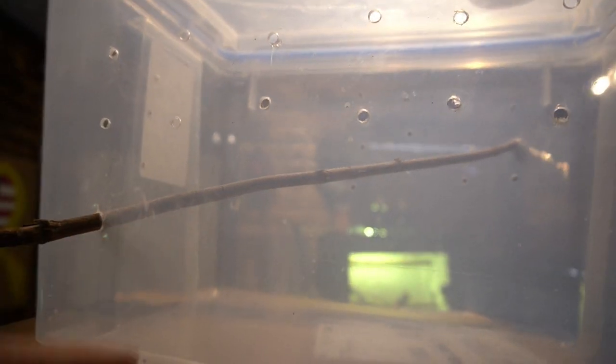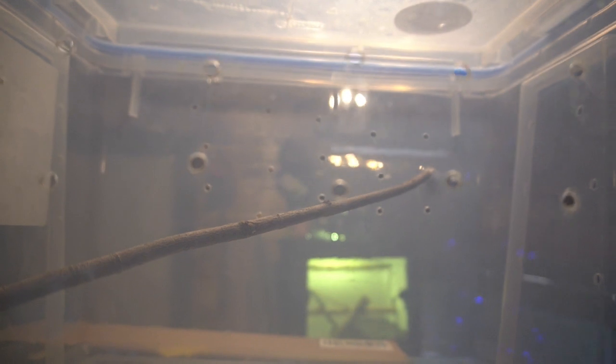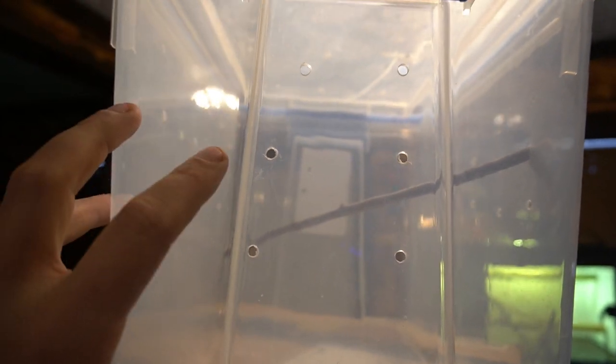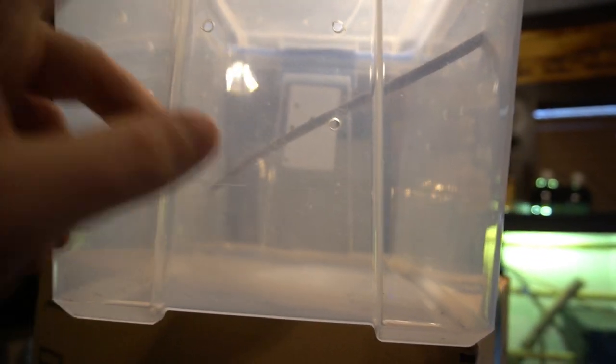Also, you can see all these little drill holes. Now those, I'm sure as most of you have guessed already, those are breathing holes. Now something to be very mindful of is that when you're drilling these, depending on the type of container that you're doing, it might shatter. We've gotten some Tupperware in that just shattered the second we put a drill bit through it.